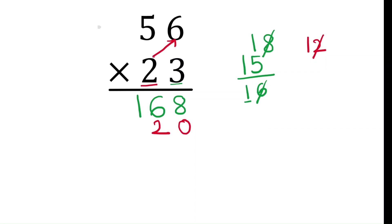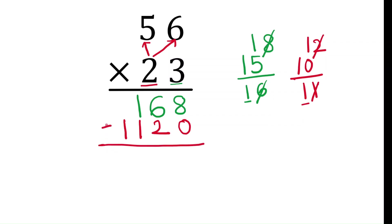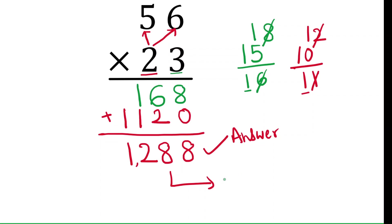Now multiply 2 with the tens digit: 2 times 5 is 10, plus carry 1 is 11. Write 1 and carry 1 to the answer. Now add the two rows: 8 plus 0 is 8, 6 plus 2 is 8, 1 plus 1 is 2, and 1. The answer is 1288.